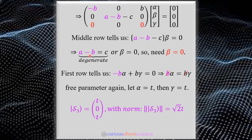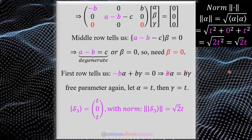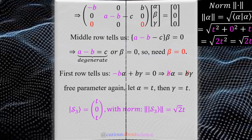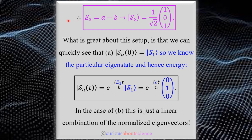For E₃ = a-b, we substitute a-b instead of a+b. The last row goes to zero again by the same process. We again get β = 0 from degeneracy arguments, and the first row gives b·α - b·γ = 0, so α = +γ. Both free parameters are positive: α = t, γ = t. The norm is again √2·t, so dividing by √2·t gives the normalized eigenvector (1, 0, 1)/√2.